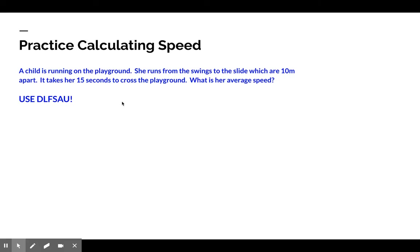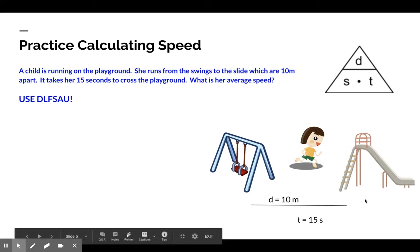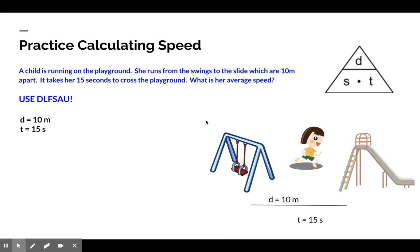Hopefully you gave that a try. This would be the triangle that we might use to come up with the formula. Here's my simple drawing. Yours would probably be way simpler, like maybe a stick figure and a couple of details. Here's my distance and how long it took to cross that distance. I list my known and unknown variables. I know my distance, I know my time, but I'm solving for speed. Therefore, this is my formula. Speed equals distance over time because it's rate.